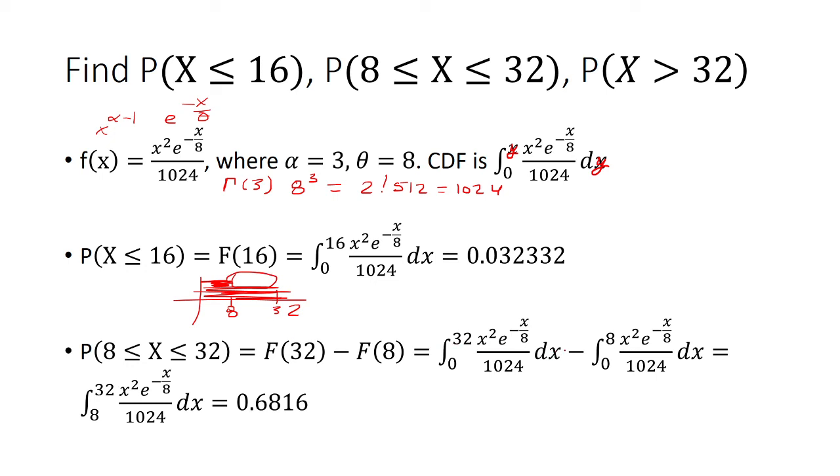So you can split it up into two separate integrals. And then notice that that's the same thing as finding the area from 8 to 32. So if you want, you can convert it to one integral. For that, you get 0.6816.